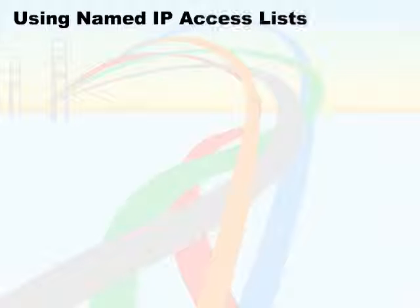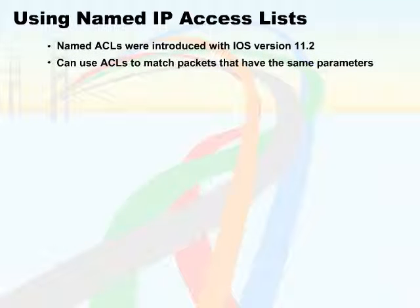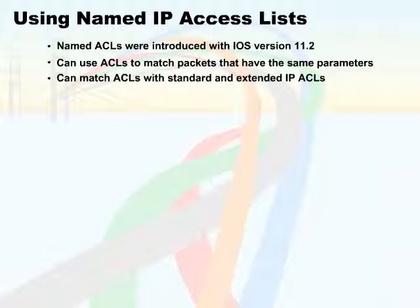Let's start with what named ACLs are. Named ACLs were introduced with iOS version 11.2. We can use these ACLs to match packets that have the same parameters. Moreover, we can match these ACLs with standard and extended IP ACLs.